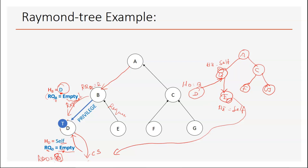This is what happens when a node exits the critical section. If after exiting the critical section D finds the queue is empty and no further request has come, but D wants to re-enter the critical section, it can do so freely because it is still holding the token. D can enter the critical section as many times as it wants until there is a request from any other site. This is how the Raymond tree-based algorithm works.